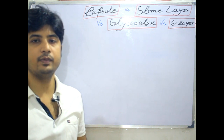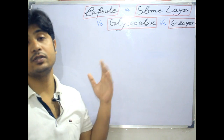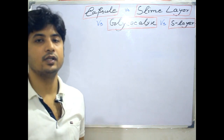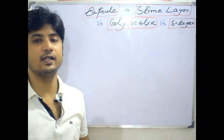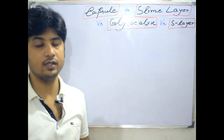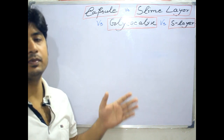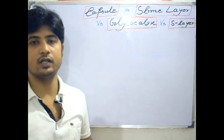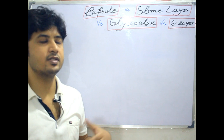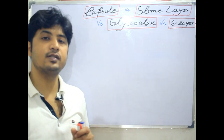Hello and welcome to another class of ABM UBIO sciences. This is Abhisak with you. Today I'll be going to teach you about capsules, slime layer, S layer, and glycocalyx. Most books didn't say clearly about these terms, which are very basic concepts of microbiology. When you study the ultrastructure of prokaryotes, you'll be familiar with these terms and you have to be clear on your concept.